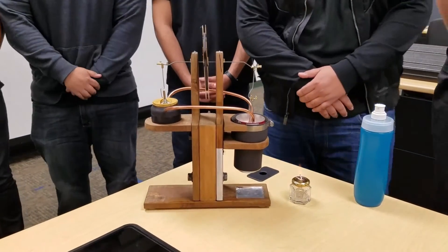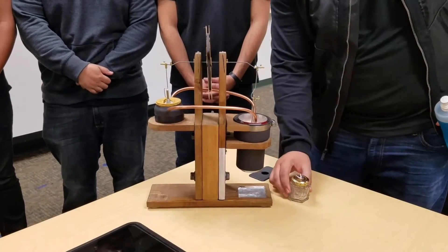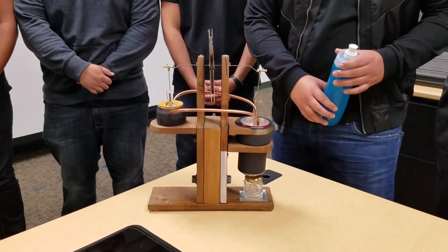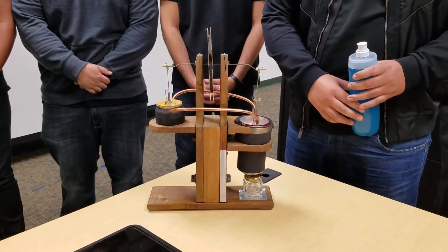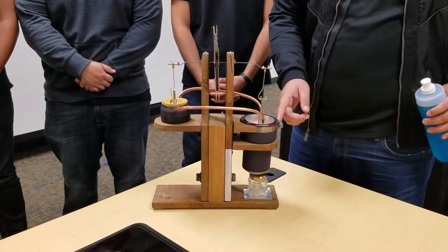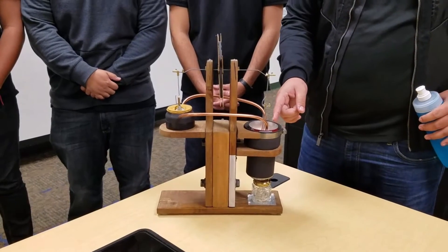This Sterling engine works by using the change in temperature provided by the cold water on top and a heat source at the bottom. The heat source pressurizes the displacer under it and the cold water depressurizes the air above it. This helps the displacer move up.